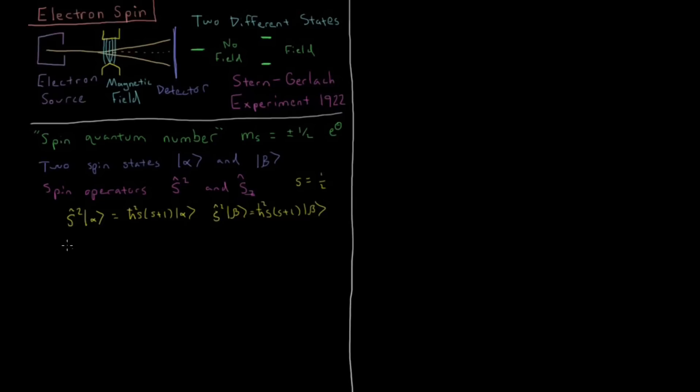Then we can also have s sub z acting on alpha, and that is going to give 1 half h bar alpha, so 1 half h bar for the eigenvalue. And s sub z acting on beta is going to give minus 1 half h bar beta.